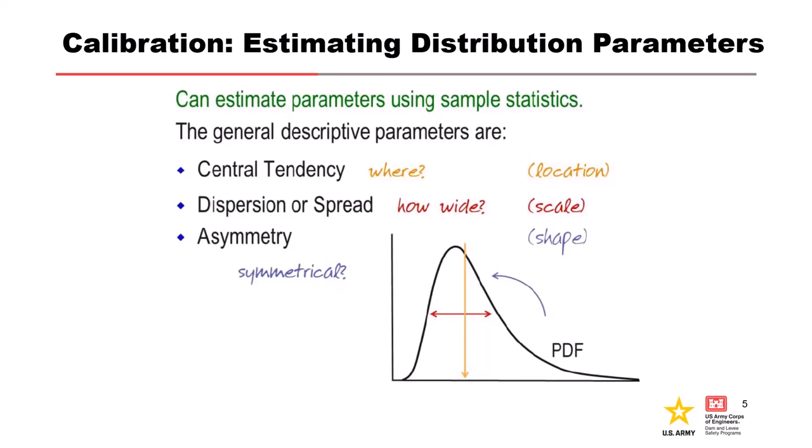All right. So now let's discuss calibration or estimating the selected distributions parameters. And we can estimate the parameters using sample statistics. So the central tendency determines where the PDF plots on the X axis. The dispersion or spread determines the width of the PDF and the asymmetry determines if the PDF is symmetrical.